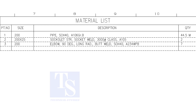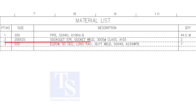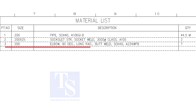Have a look at the material list. Item number one is an eight inch, schedule 40 pipe. Item number two is a sacolette — the size is one inch. Item number three is an eight inch long radius elbow, and the quantity is seven numbers.